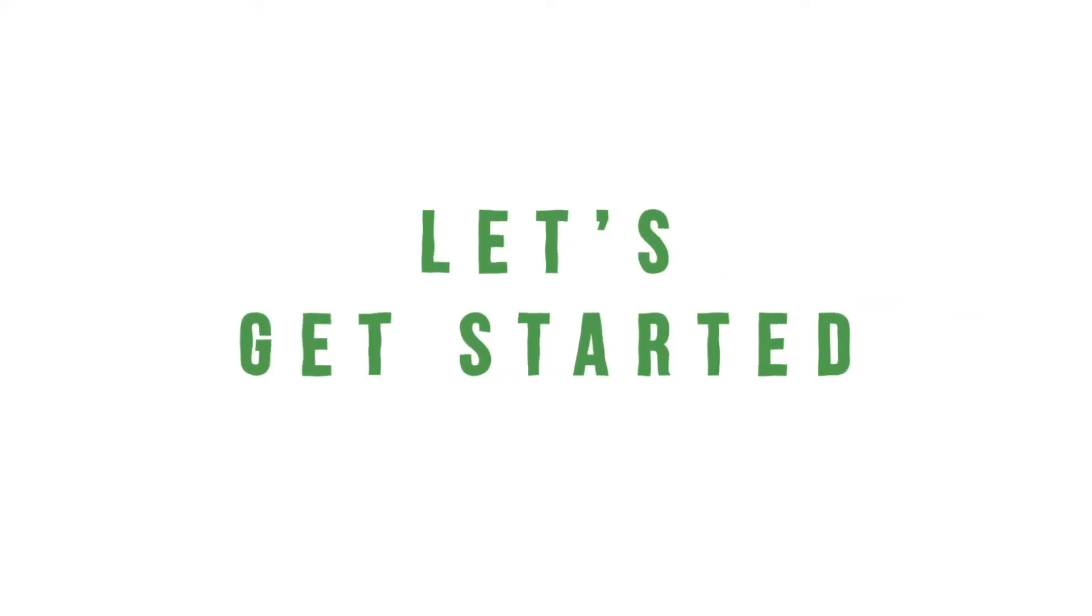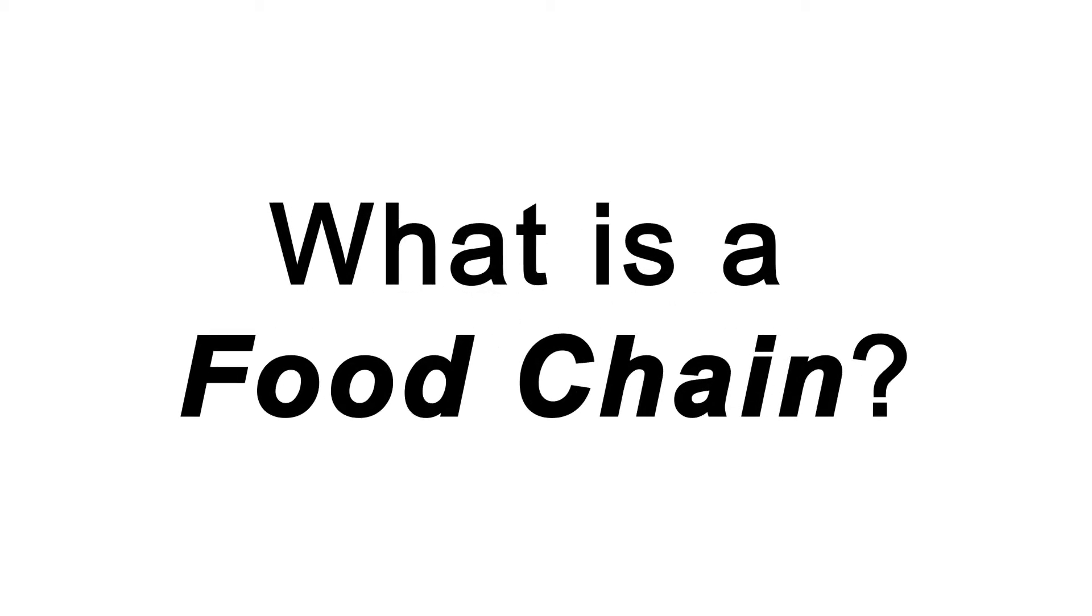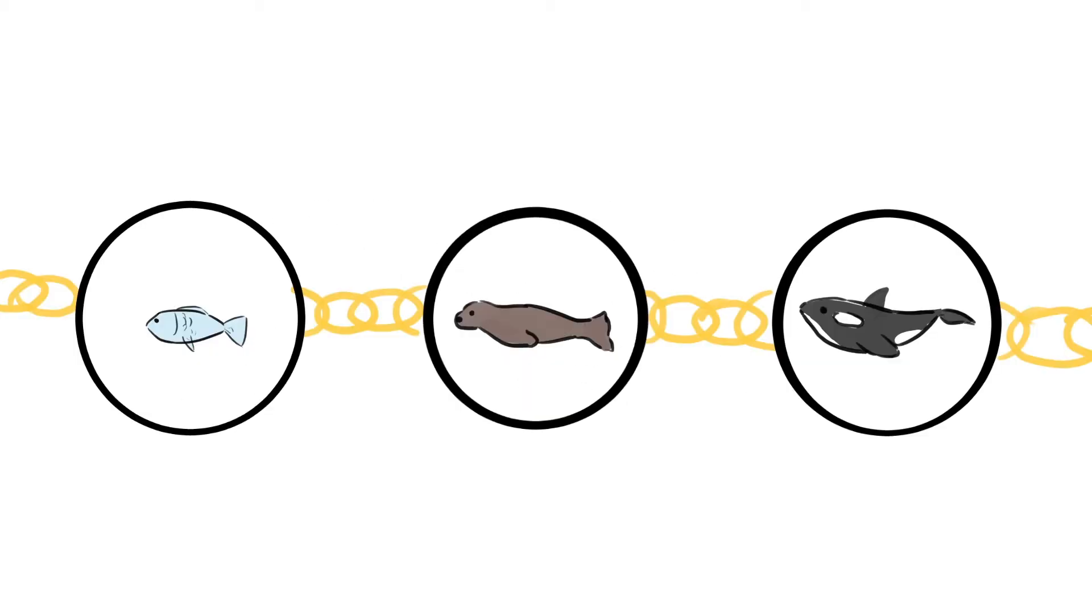Let's get started. Before we begin, take a moment to pause this video and ask yourself, what is a food chain? Well, a food chain is basically a series or a chain of organisms that are dependent on the previous organism for a source of food.